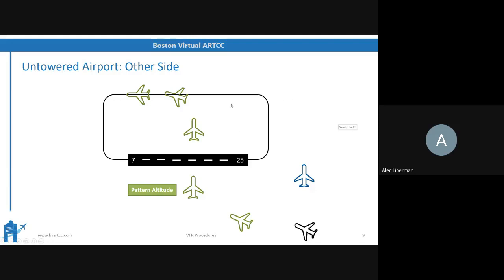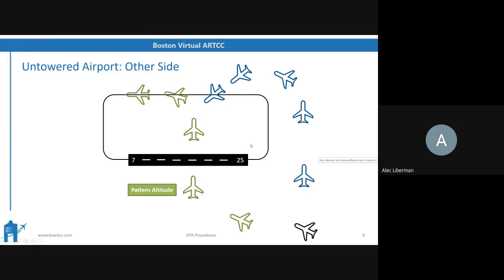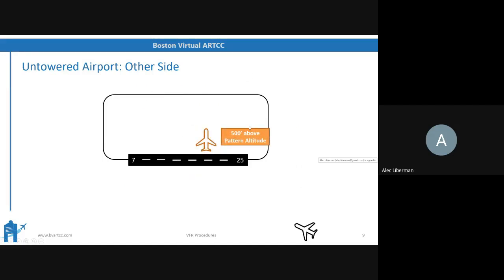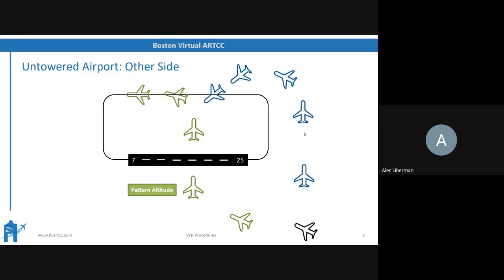If you are farther from the airport, you could do what's called a teardrop: overfly the airport 500 feet above traffic pattern altitude, then make a right turning 270-degree turn to join the downwind. Two ways: either the 90-degree turn to the left at pattern altitude, or flying above the runway and joining the right teardrop. The preferred method is flying far enough away from the airport and then joining the downwind at a 45-degree angle.